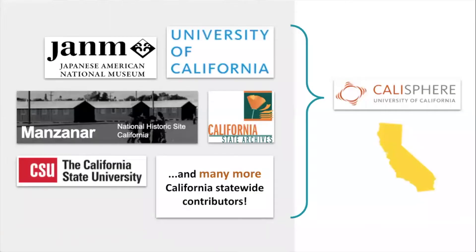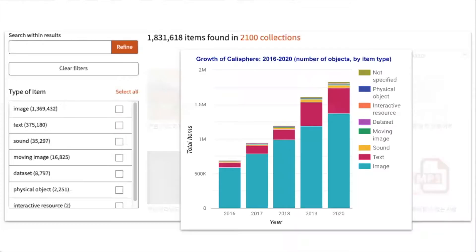Although Calisphere is primarily developed and hosted by the California Digital Library, the collections are owned and contributed by our statewide partners, including all 10 UC campus libraries, as well as public libraries, academic libraries, museums, and historical societies throughout California. We currently work with over 300 cultural heritage organizations. In Calisphere, you'll find digital access to over 1.8 million primary resources, including photographs, documents, letters, and so much more. Calisphere continues to see steady and rapid growth every year, not only adding new contributors, but more content as well.